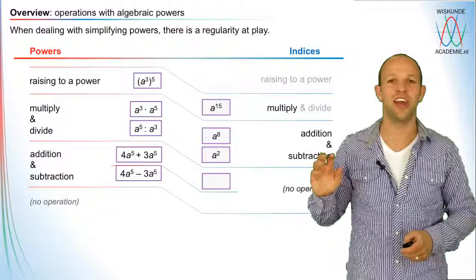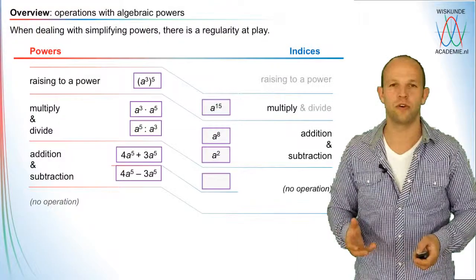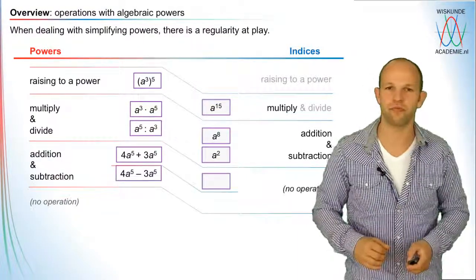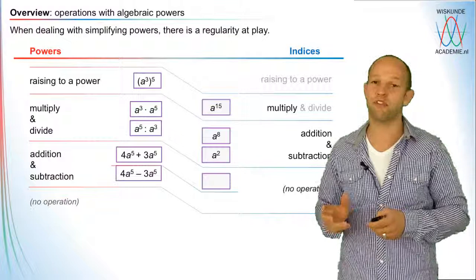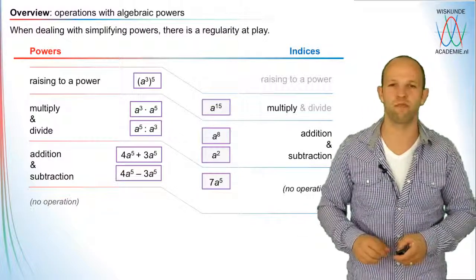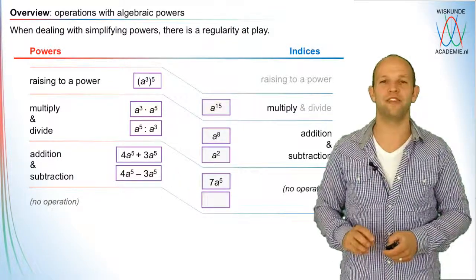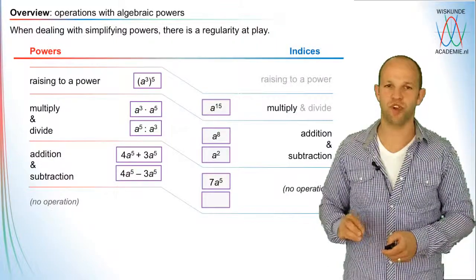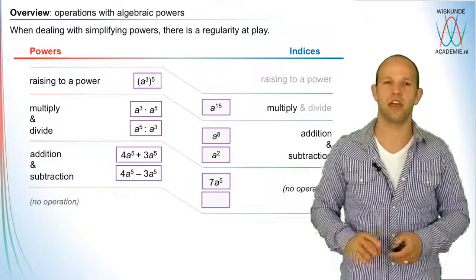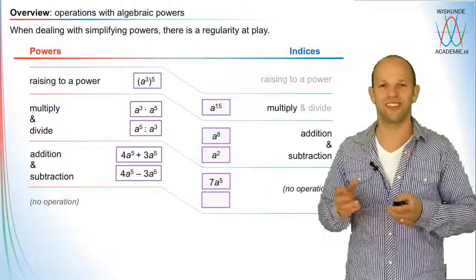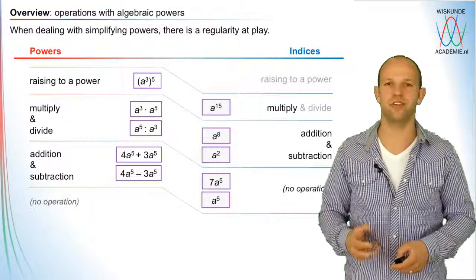Before you start, both terms have to have the same index — both a to the power 5, or both a to the power 7, or both b to the power 2. The indices have to be the same, as well as the base. So in this case, they're both a to the power 5: you add up the coefficients 4 and 3, giving you 7a to the power 5. The same applies to subtraction: 4a to the power 5 minus 3a to the power 5 — you subtract only the coefficients, the indices stay the same, leaving you with 1a to the power 5, or simply a to the power 5.